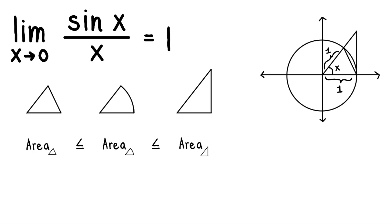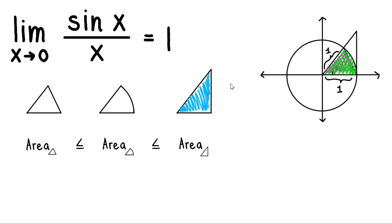Observe that the green-shaded sector occupies the pink-shaded triangle area — so indeed the sector area is larger than the small triangle. And the big triangle clearly occupies both shaded regions, confirming the area inequality holds. We'll be using this inequality to prove the limit.